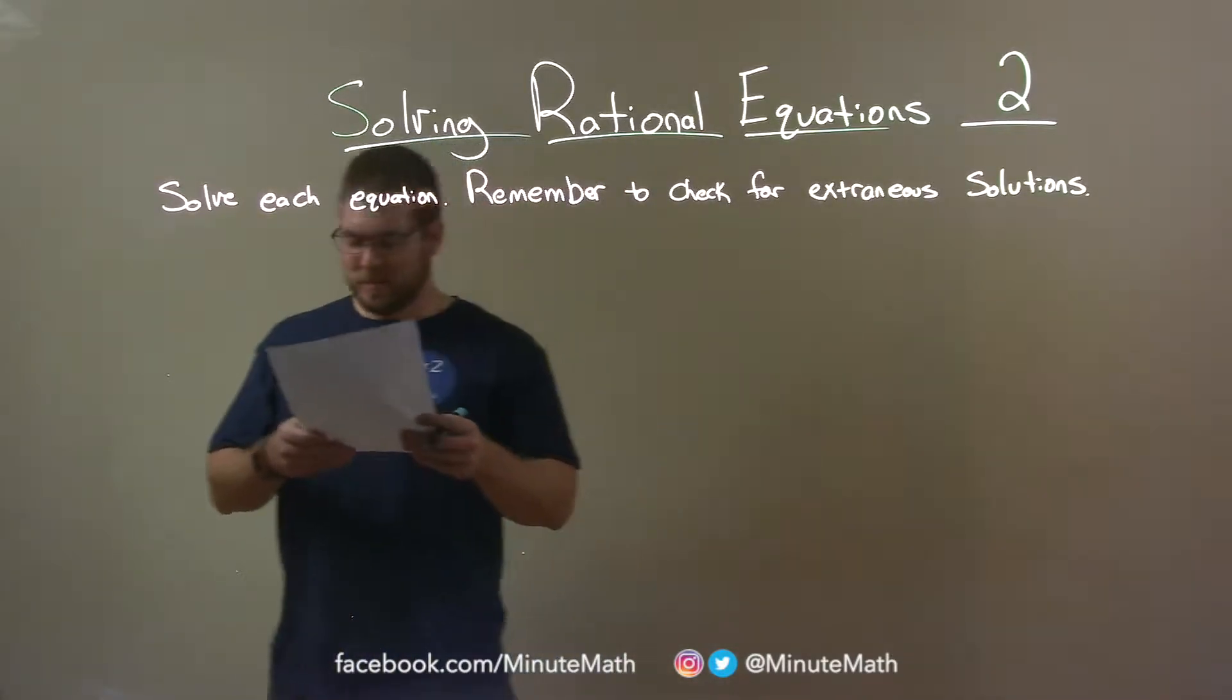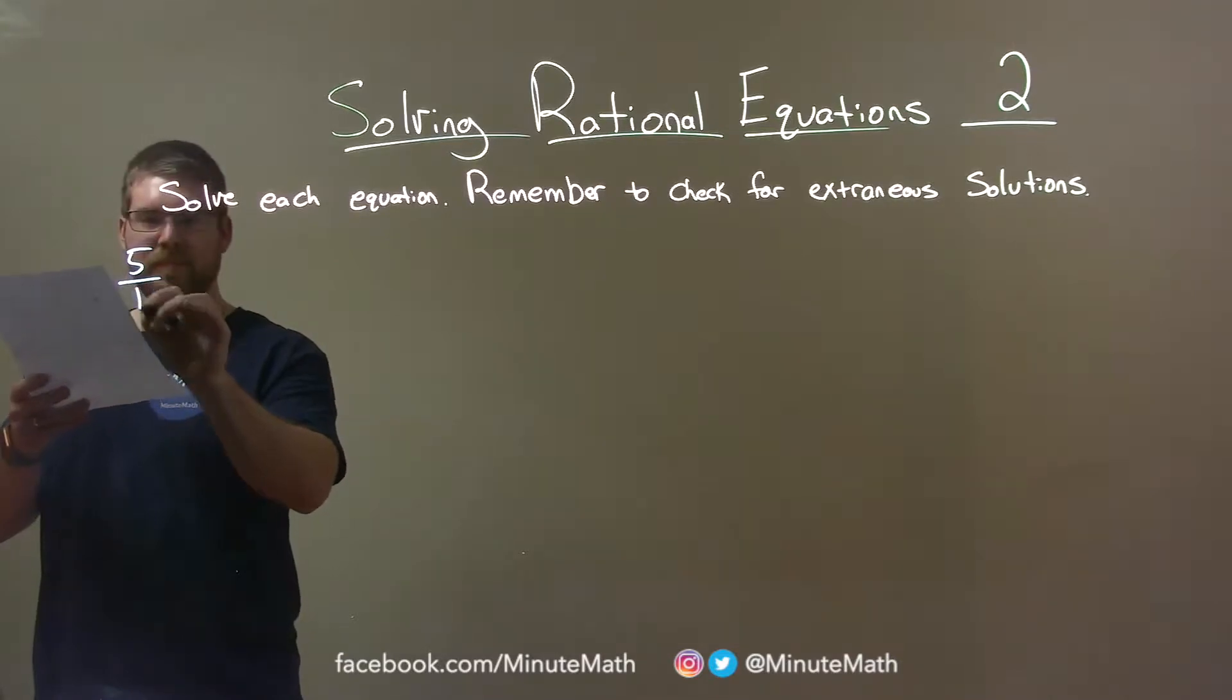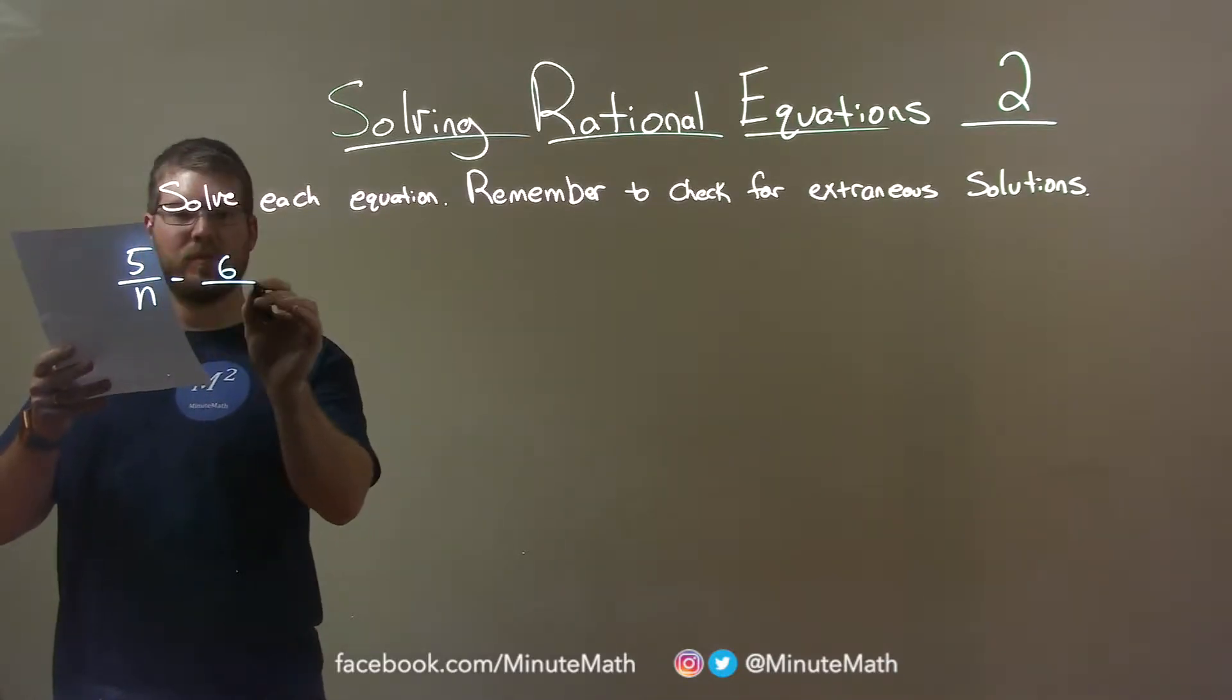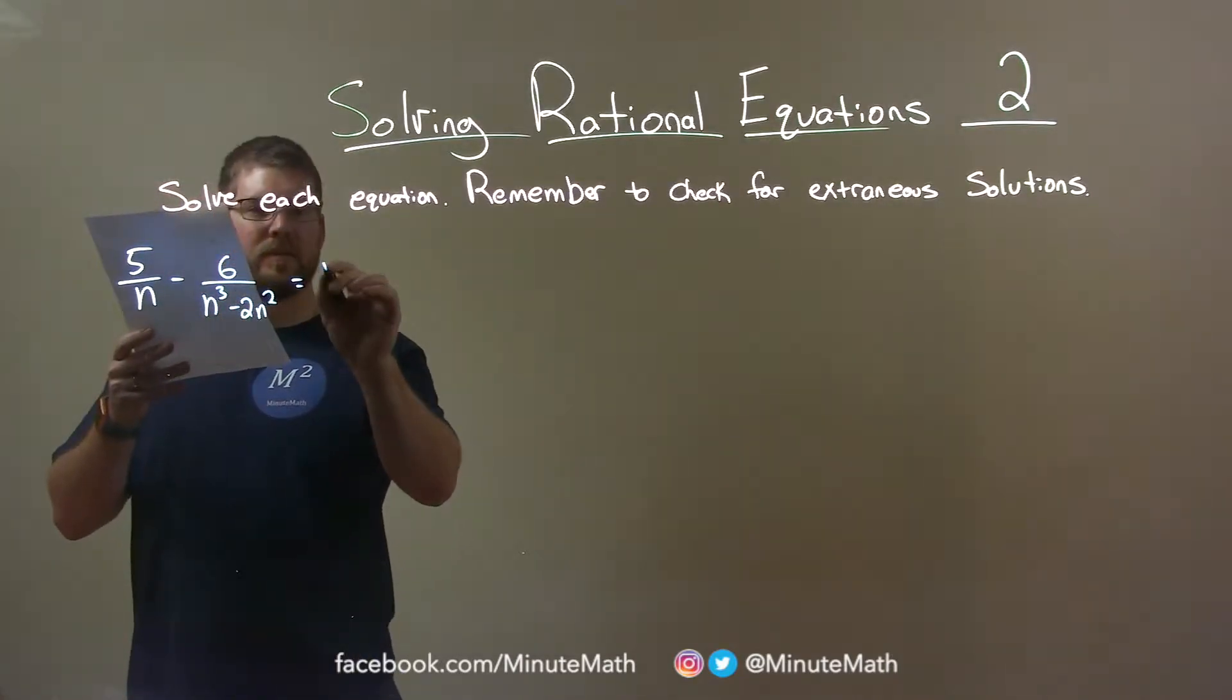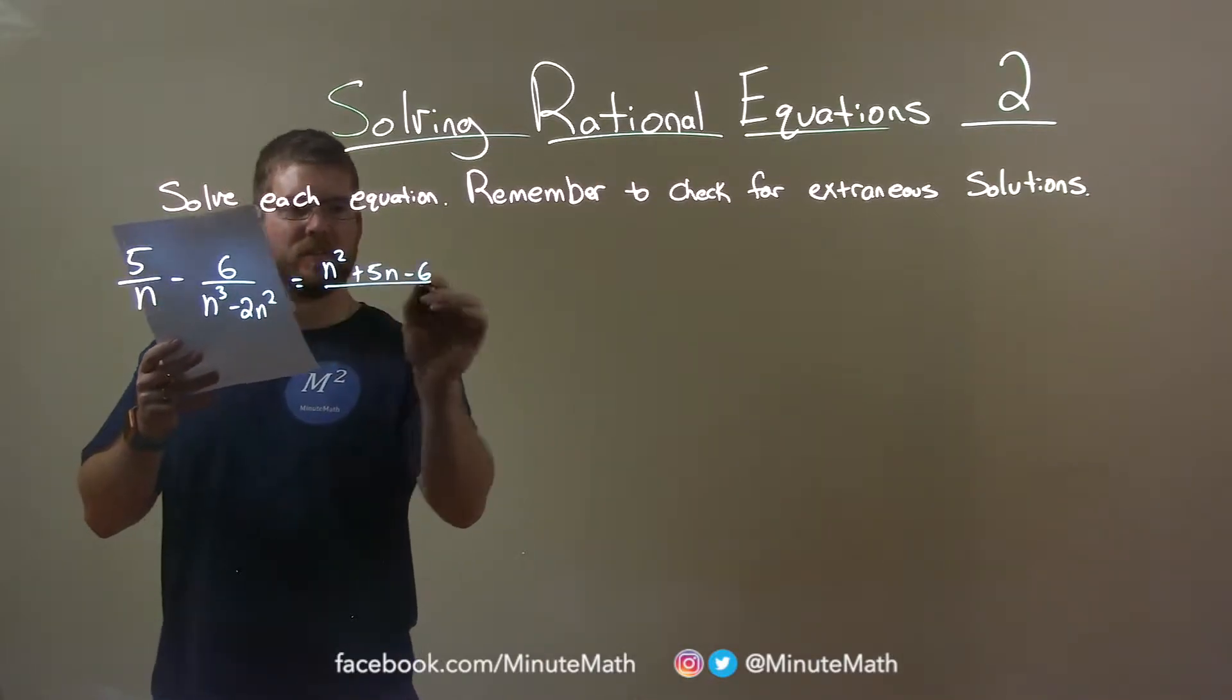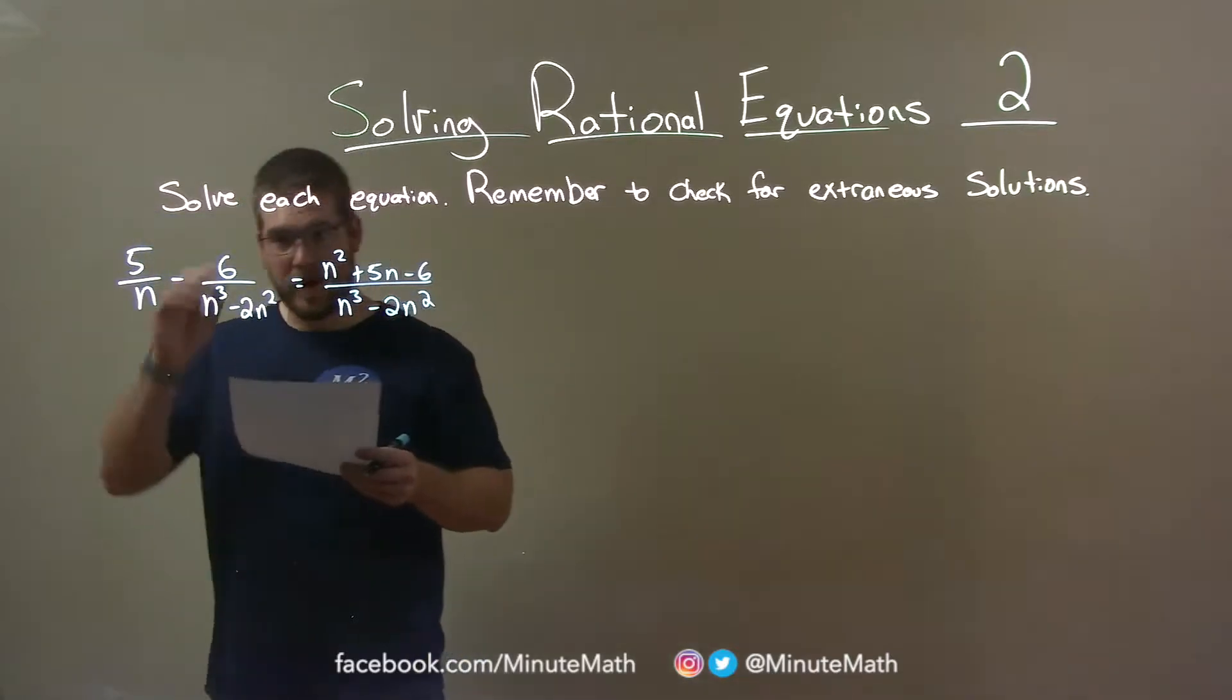If I was given this problem: 5 over n minus 6 over n to the third power minus 2n squared equals n squared plus 5n minus 6 over n to the third power minus 2n squared.